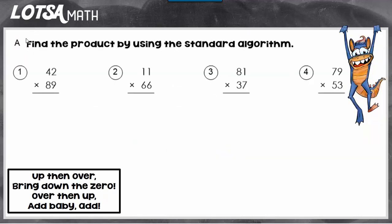At number one, we have 42 times 89. And down here we have the rhyme that'll help us. So we start at the bottom factor in the ones place. And it goes up, then over. So we're going to multiply first going straight up. So 9 times 2 is 18, carry the 1. And then we're going to do over. So 9 times 4 is 36, plus 1 is 37.